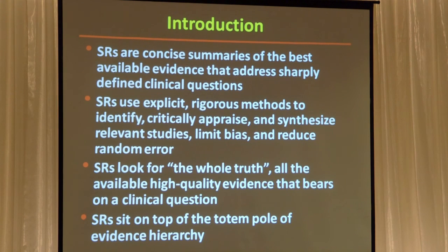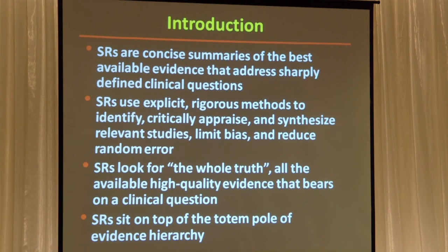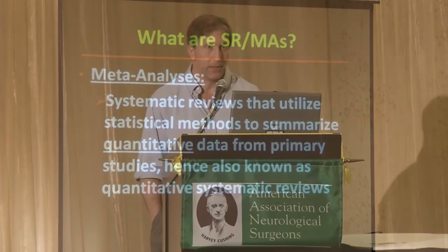With that in mind, systematic reviews and meta-analyses are almost the same. They're concise summaries of our best evidence, and they use a very rigorous method that's explicit and transparent so that you can reproduce what other authors have done — to collect, appraise, and synthesize a result from the evidence about a specific question in a way that minimizes both bias and random error. If done right, they're supposed to look at the whole truth — all of the evidence about a particular question.